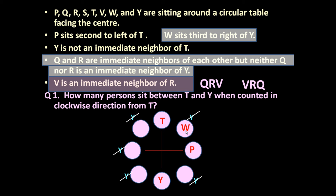So Y and W positions are now fixed. These three — Q, R and V — will be sitting together. From the constraint that neither Q nor R is an immediate neighbor of Y, Y's neighbor must be V. So they will sit in the order V, R, Q relative to Y. Only one position is left, and the one remaining person is S, so S will occupy that position.